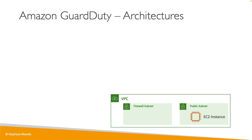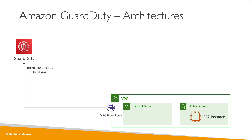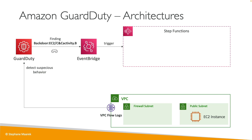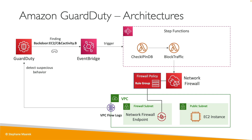Another architecture uses a firewall subnet with the AWS Network Firewall feature. With an EC2 instance and VPC Flow Logs, GuardDuty detects a finding — for example a backdoor with suspicious activity. EventBridge triggers a Step Functions workflow with multiple Lambda functions: first checking whether the attacker's IP is in the malicious IP database, then blocking traffic by calling the Network Firewall API to add the IP to a rule group for a firewall policy applied to a Network Firewall endpoint. As a result, EC2 traffic goes through the firewall subnet and cannot connect to the suspicious host. Block results go to an SNS topic indicating success or failure, with manual intervention if needed.